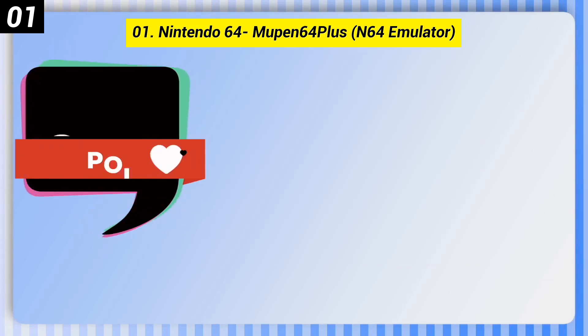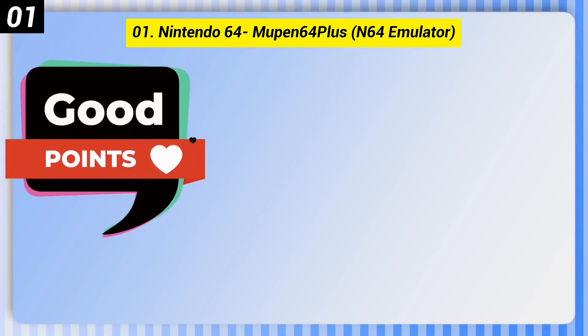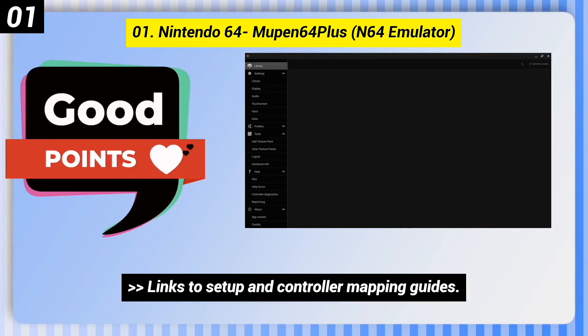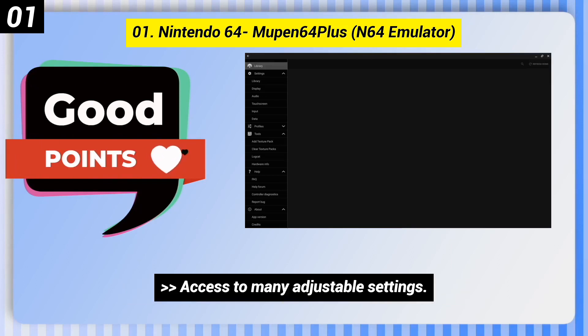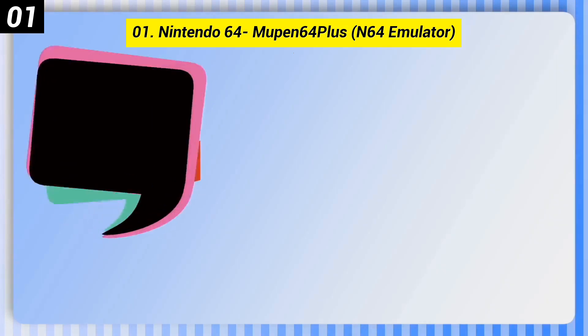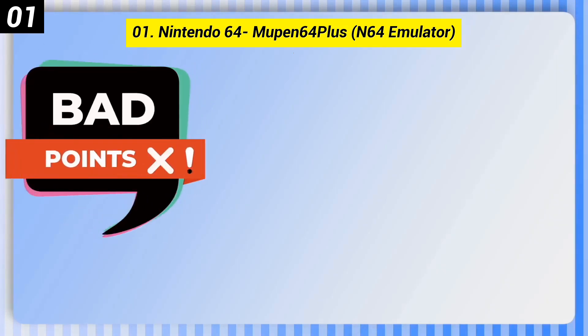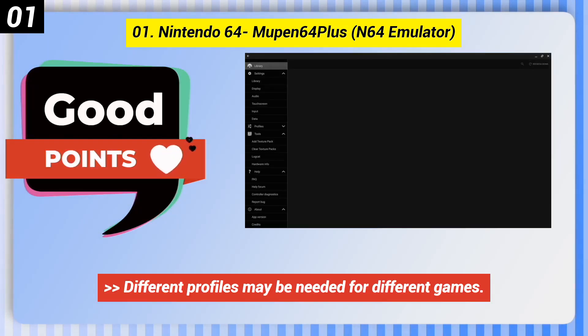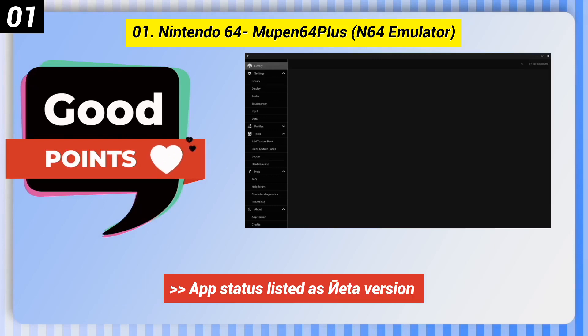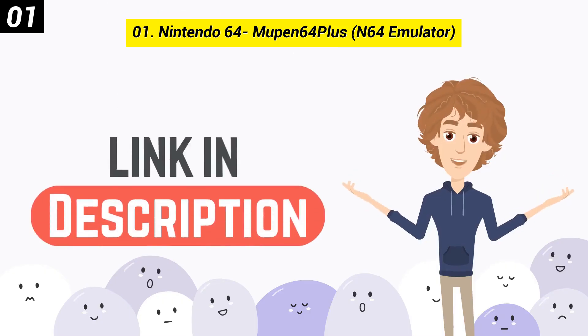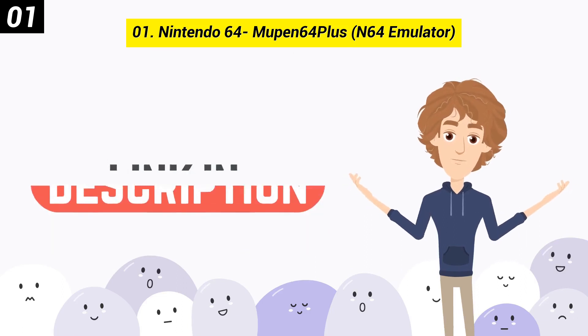Here are some good points of this one: links to setup and controller mapping guides, and access to many adjustable settings. Here are some bad points: different profiles may be needed for different games, and the app status is listed as beta version. You can check out the link in the description box.